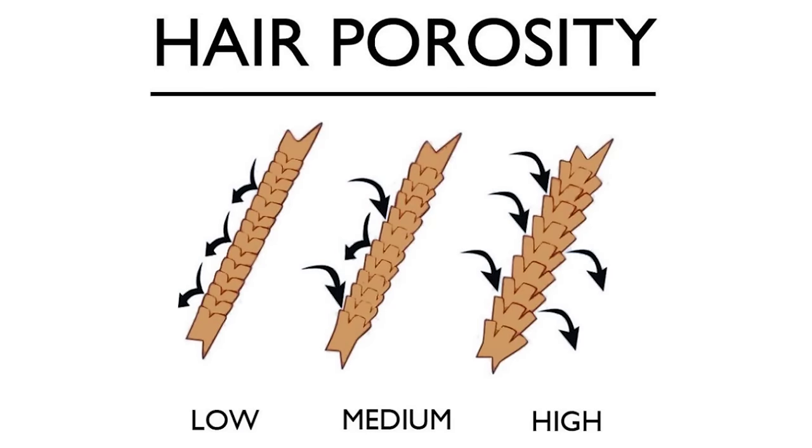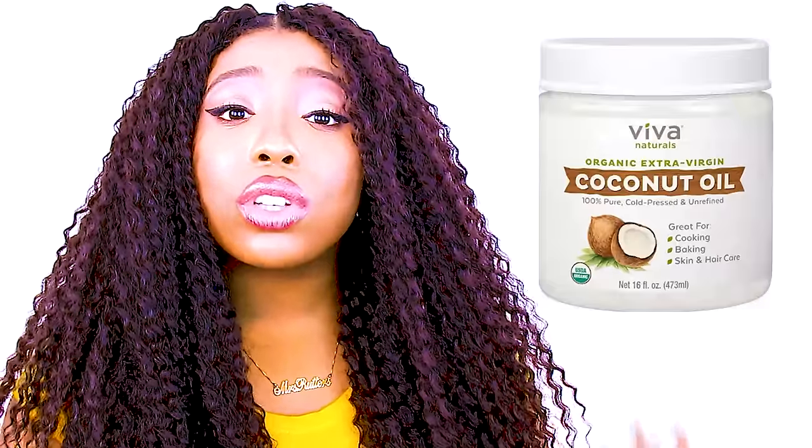Medium porosity hair is somewhere in the middle between the abilities of low and high porosity hair. It's the perfect balance — you can wet your hair in under a couple of minutes when washing or conditioning, and air dry your hair in less than an hour. It has the best of both because water and chemicals go in and out of the hair shaft easily, but it doesn't dry as fast as high porosity hair. With medium porosity hair, you can lock in moisture using light oils or a mix of heavier creams and butters such as shea butter, cocoa butter, coconut oil, argan oil, or jojoba oil.